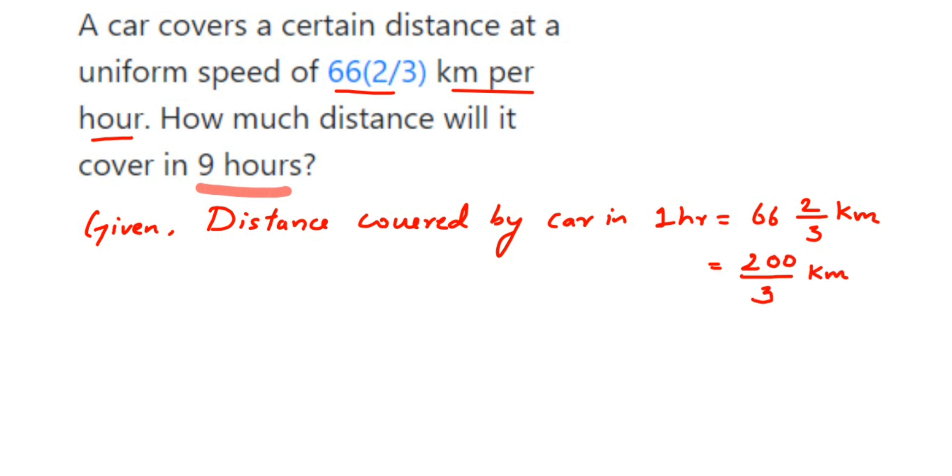I hope you understood how we have converted. First we have to multiply these two numbers: 3 into 66 is 198. Whatever answer we got, we add with the numerator: 198 plus 2 is 200, so 200 upon 3 kilometers. Now this is for one hour. Similarly, we have to find out for nine hours.